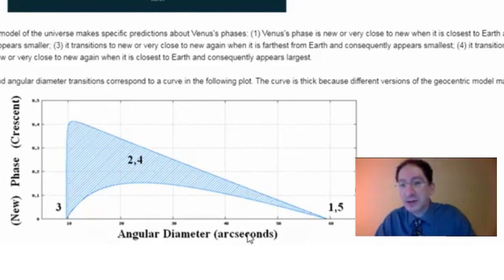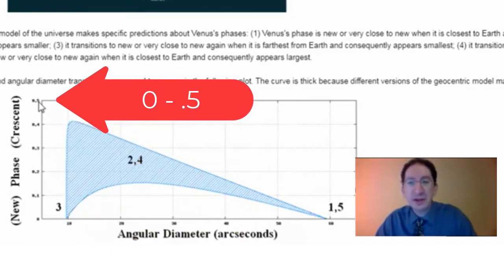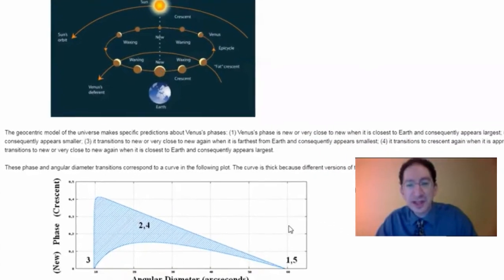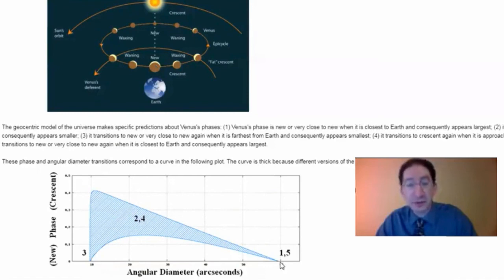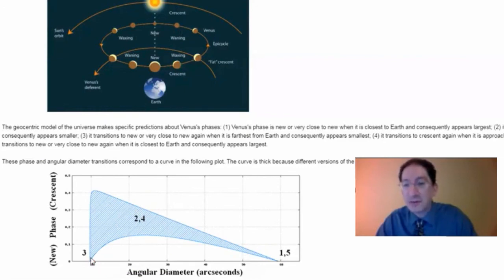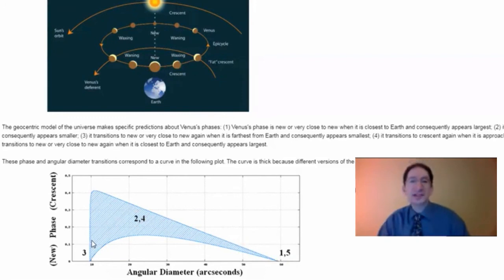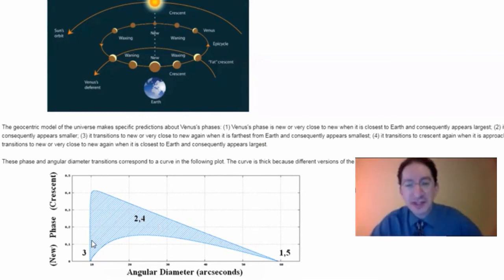This is plotted in a figure: on the x-axis we have angular diameter of Venus, and on the y-axis the phase, running from 0 to 0.5, where 0.5 would be a quarter Venus. Beginning at the closest position, Venus has a large angular diameter but a phase of 0 — a new Venus. As it works its way around, phase increases slightly and size decreases, until at its farthest it has the smallest size and nearly no phase. You have some flexibility in the geocentric model — you can make the epicycle smaller or larger — so there is a range of possible phase and angular-diameter combinations.